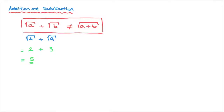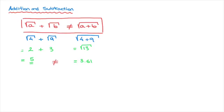On the other hand, if we were to consider the square root of four plus nine, then that would equal the square root of thirteen. You can check with your calculators, but the square root of thirteen is equal to three point sixty-one, rounded to two decimal places. And five is not equal to three point sixty-one.